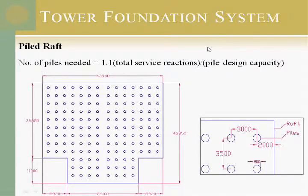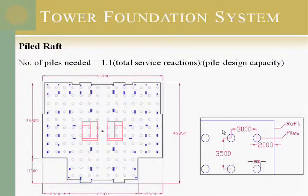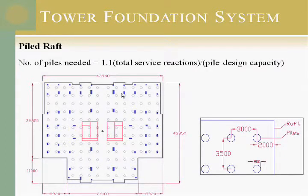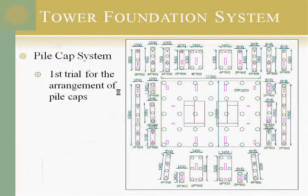To estimate the number of piles using a conventional pile raft, we take the total surface reaction and divide it by the pile design capacity to determine how many piles distributed equally. However, we had a problem: some columns were concentrating more load on certain piles. For example, one column was putting more load on one pile, so that pile was not adequate and the load was not being distributed to all piles, even with a rigid raft.